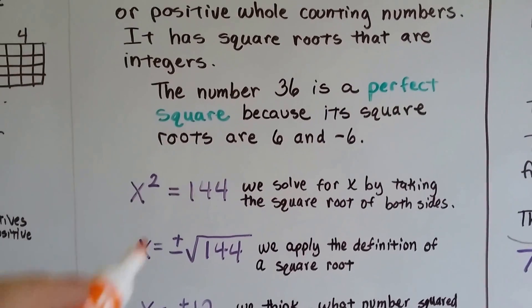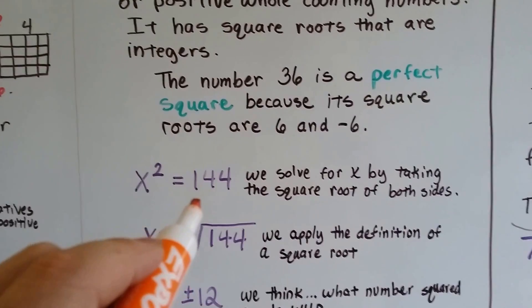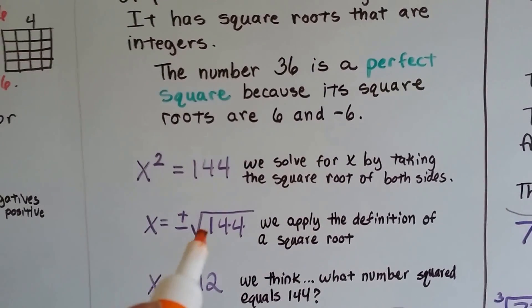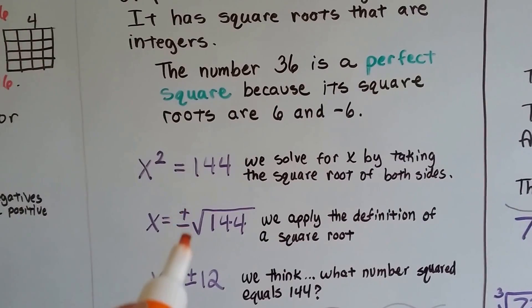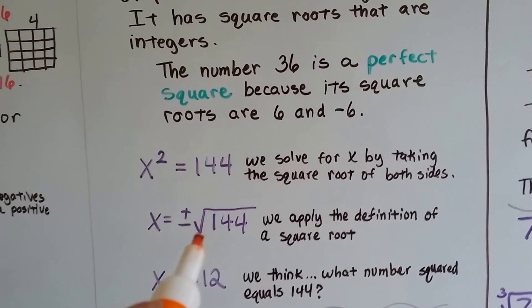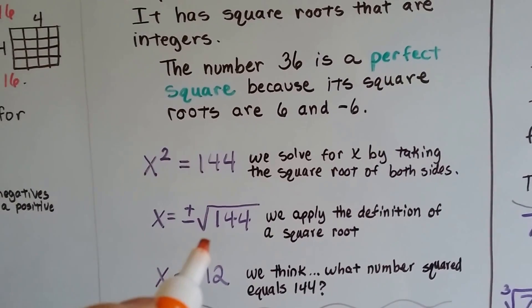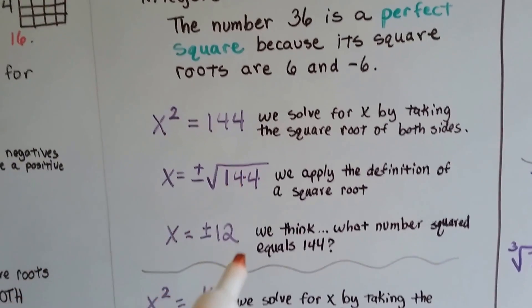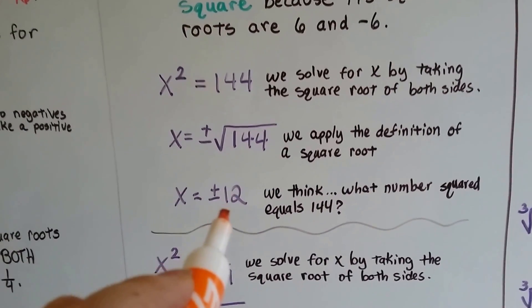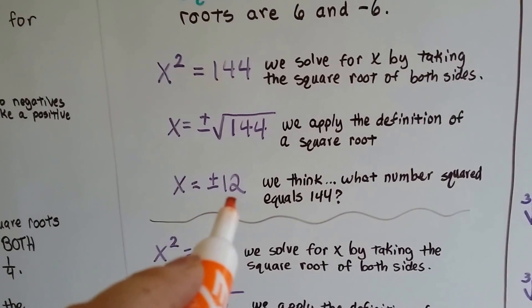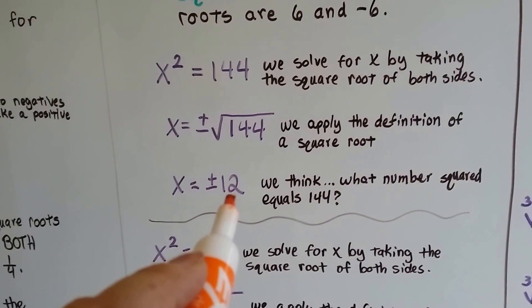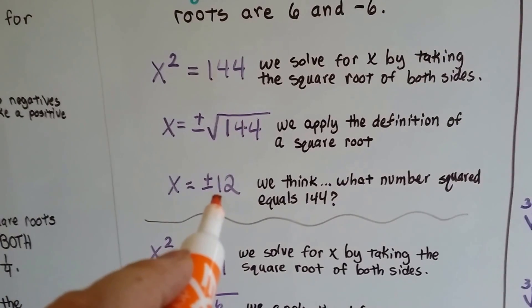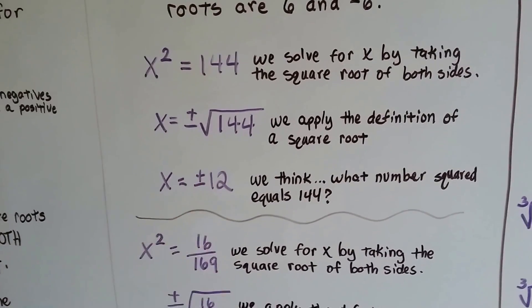So if we have x squared equals 144, we solve for x by taking the square root of both sides. It's going to be a positive or negative. We apply the definition of a square root — it's a number times itself that equals 144. We think, what number squared equals 144? Well, 12 times 12 equals 144, and negative 12 times negative 12 would equal a positive 144. So it would be plus or minus 12.